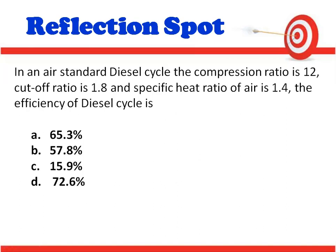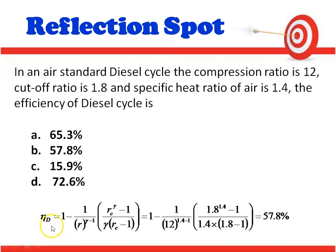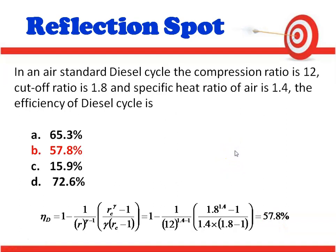Question 3: For the same compression ratio, with increase of cutoff ratio, the efficiency of the Diesel Cycle decreases. Question 4 (numerical): For an air standard Diesel Cycle with compression ratio R = 12, cutoff ratio R_C = 1.8, and gamma = 1.4, the efficiency = 1 − (1/12^0.4) · (1.8^1.4 − 1)/(1.4 × 0.8) = 57.8%. The correct answer is 57.8%.